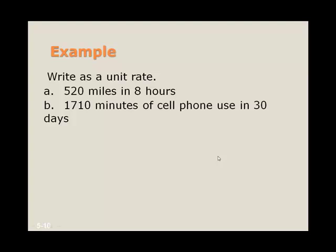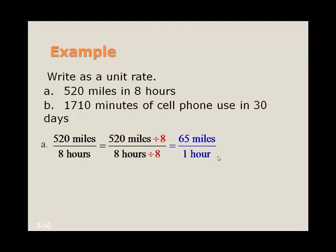So let's write these as unit rates: 520 miles in 8 hours. So imagine you drove 520 miles in 8 hours. What was your average speed we can take a look at? So let's see if 8 goes into 520, it does, and we get 65 miles in 1 hour, and once we have a unit rate, we can write 65 miles per hour.